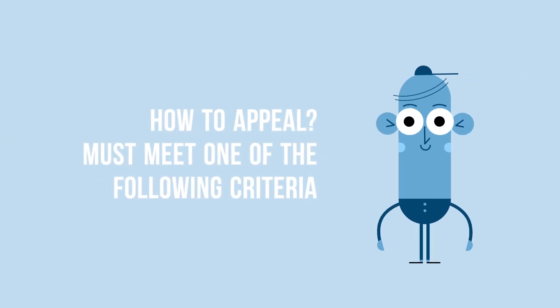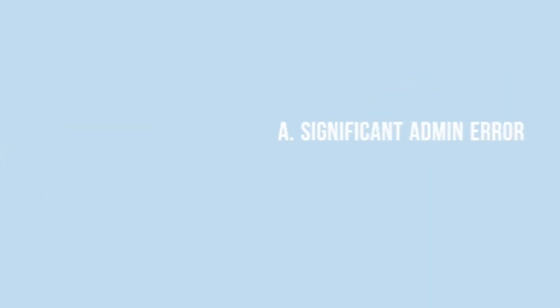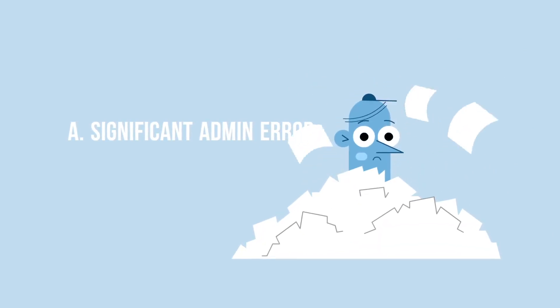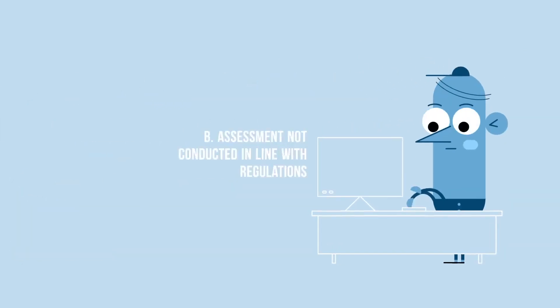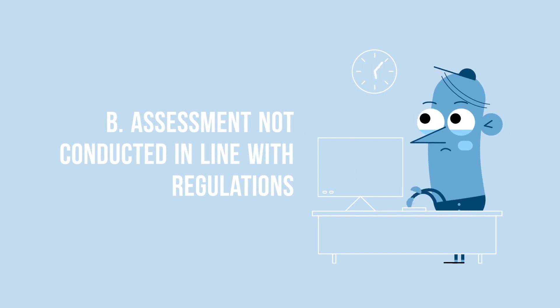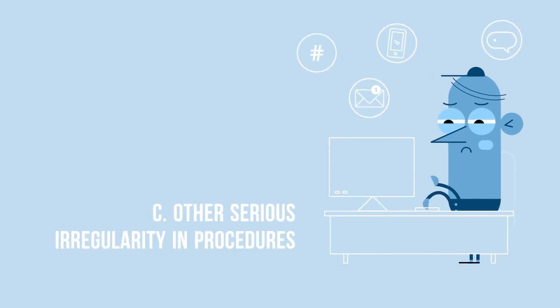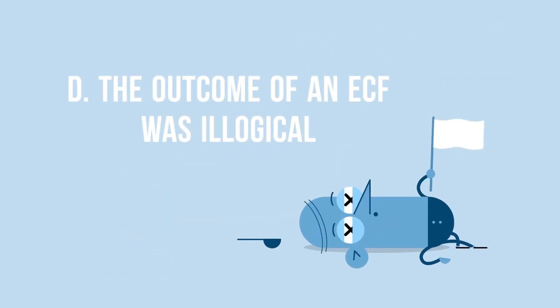How do I know if I can appeal? To appeal you must meet one of the following criteria: A) that a significant administrative error has occurred, B) that the assessment was not conducted in accordance with the approved regulations, C) that there was some other serious irregularity in the procedures, D) that the outcome of the ECF was illogical to the evidence supplied.